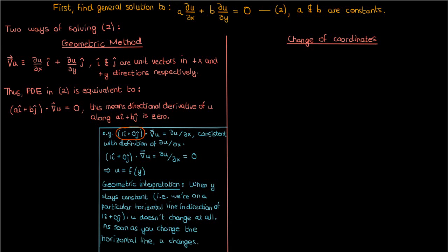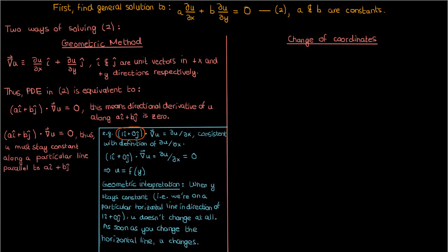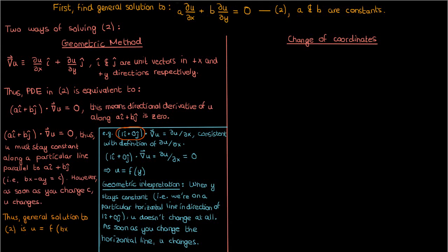We can use the same geometric logic to find the solution for the general parameters a and b. Since the directional derivative of u along ai plus bj is 0, u must stay constant along a particular line parallel to ai plus bj — that is, along a line given by bx minus ay equals c. As soon as you change the constant c, u changes. So the general solution to this PDE is a pure function of bx minus ay.